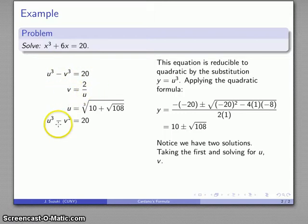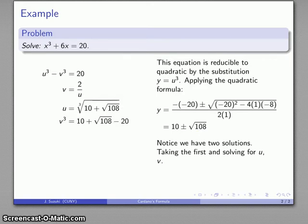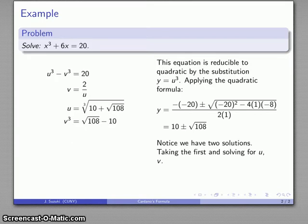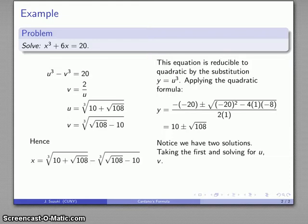I can find the value for v a lot more easily by using the first equation. The second equation is going to be very messy. The first equation actually isn't too bad. Remember, y is u cubed. So this expression here is going to be the value of u cubed. So that tells me v is u cubed minus 20, and again, I know that u cubed y is 10 plus root 108, and that simplifies. And v is the cube root, and again, x is the difference u minus v.